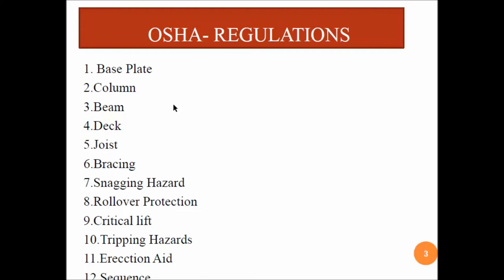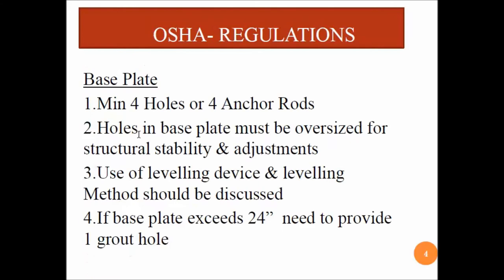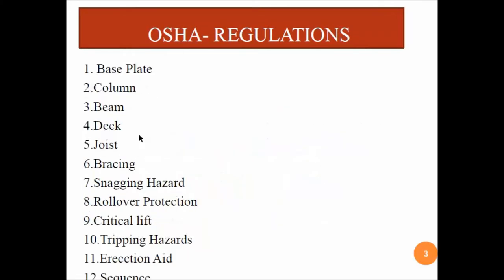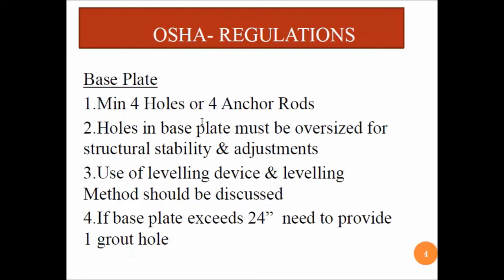As per AISC standards and OSHA regulations there are a lot of things to keep in mind, but I'll explain a few key things to make it easy and simple to understand. The different areas in OSHA regulations include: base plate, column, beams, deck, joist, bracings, snagging hazard, rollover protection, critical lift, tripping hazards, erection aids, and sequence. The important ones to focus on are base plate, column, beam, deck, and joist.